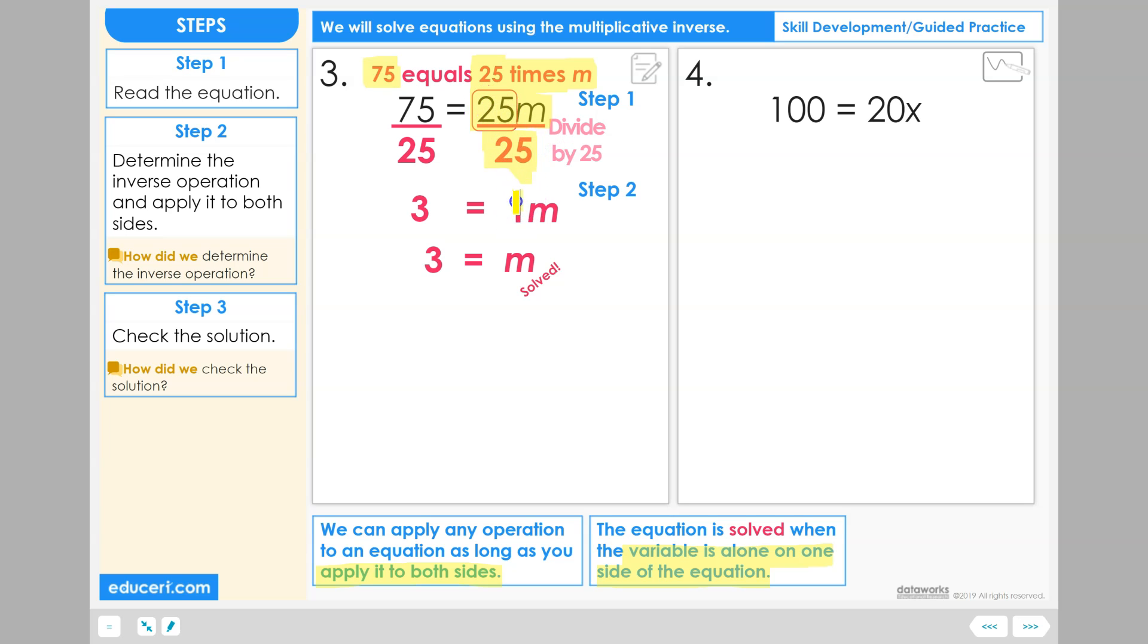Dividing 25 by 25 turned 25m into 1m, which of course is just m. And on the other side to keep balance, we also divided by 25, giving us 75 divided by 25 equals 3, and ultimately we found m equals 3.